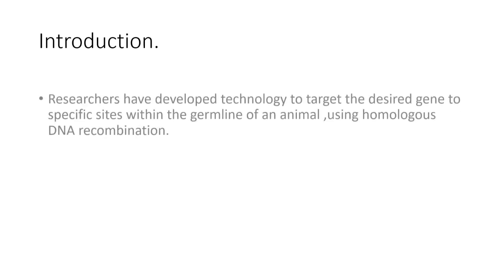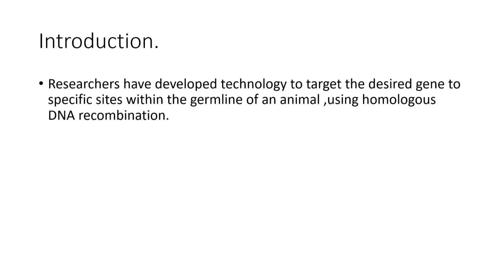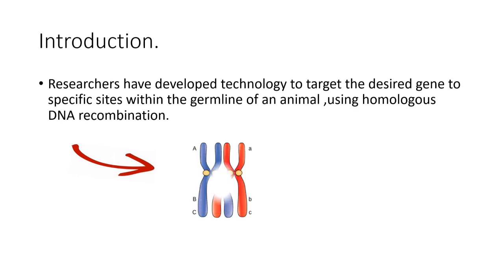We will start with a brief introduction. Researchers have developed technology to target desired genes at specific sites within the germline of an animal by using homologous DNA recombination. Using this homologous recombination, we are able to target the desired gene to specific sites within the germline.